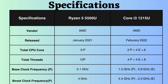The Core i3-1215U was released approximately one year after the launch of the Ryzen 5500U. The Core i3-1215U is equipped with two performance cores and four efficiency cores, whereas the Ryzen 5500U features six performance cores. The Ryzen 5 5500U, with its six physical cores, presents a significant advantage over the Core i3-1215U's two physical cores.